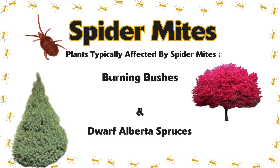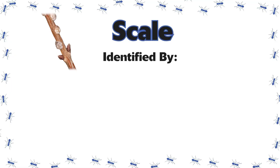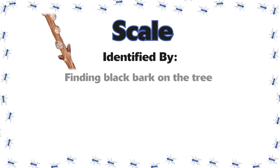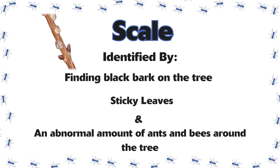The second insect we're going to be talking about today is scale. Scale attaches itself to the bark of the tree and sucks nutrients out of the tree. Scale can be identified by finding black bark on the tree, sticky leaves, and an abnormal amount of ants and bees around the tree.